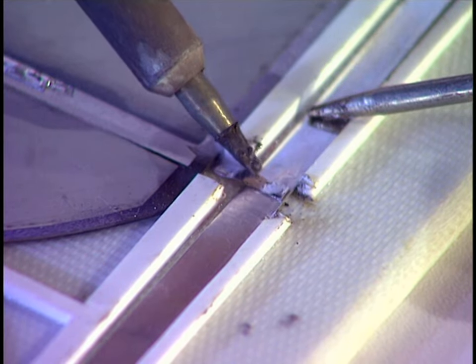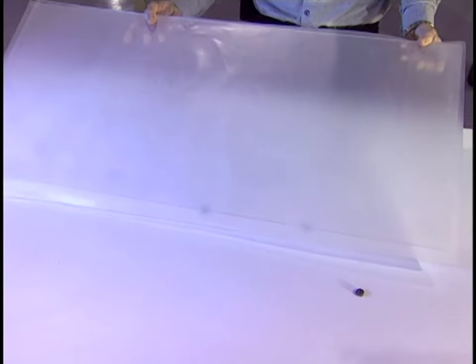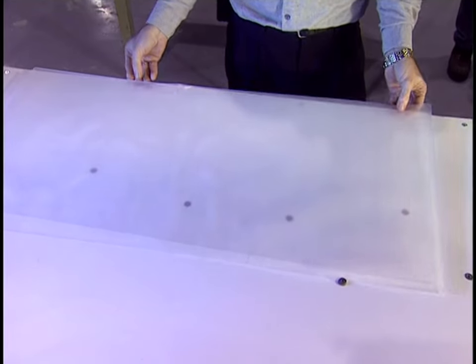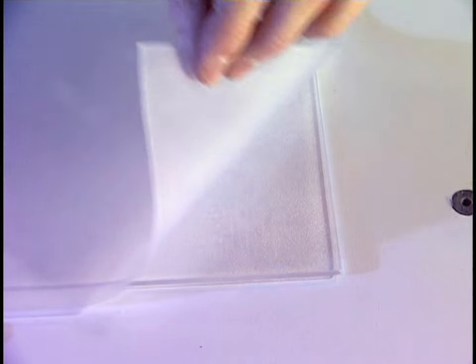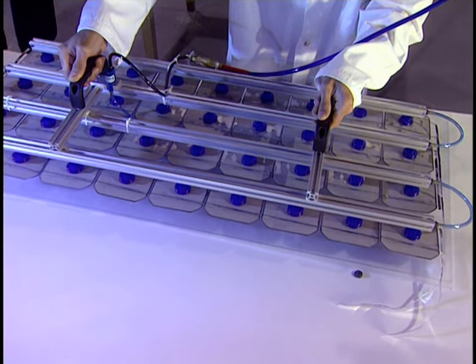Solder connections are made to link the modules to the metallic strip. Then they put on this transparent sheet of layered glass. It serves as a rigid transparent form which will support the modules.